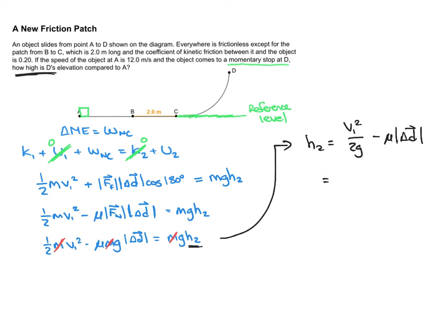I'll do the substitutions now. So we've got 12 meters per second at the start. That's going to be squared over 2 times 9.8 minus the mu value is given, 0.20. And the displacement for the friction patch is 2. Okay, so let's calculate that out. So I'm kind of coming up with 6.9 meters.